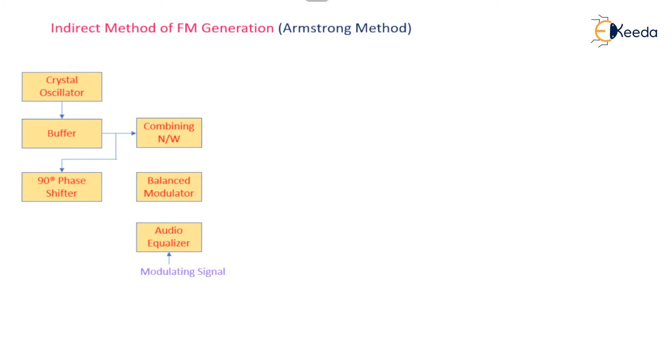The combination of the balanced modulator and the audio equalizer processes the modulating signal. The arrangement is such that the output of the 90-degree phase shifter is given to the balanced modulator, whereas the second input is from the audio equalizer, which is coupled through the modulating signal.